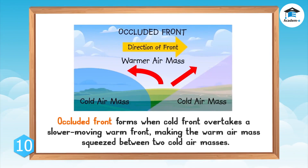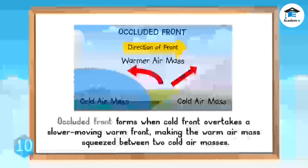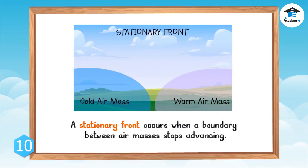An occluded front forms when a cold front overtakes a slower-moving warm front, causing the warm air mass to be squeezed between two cold air masses. At an occluded front, the cold air from the cold front meets the cool air ahead of the warm front, and the warm air rises. Occluded fronts usually form around areas of low atmospheric pressure. A stationary front occurs when the boundary between air masses stops advancing and remains in the same place for several days.